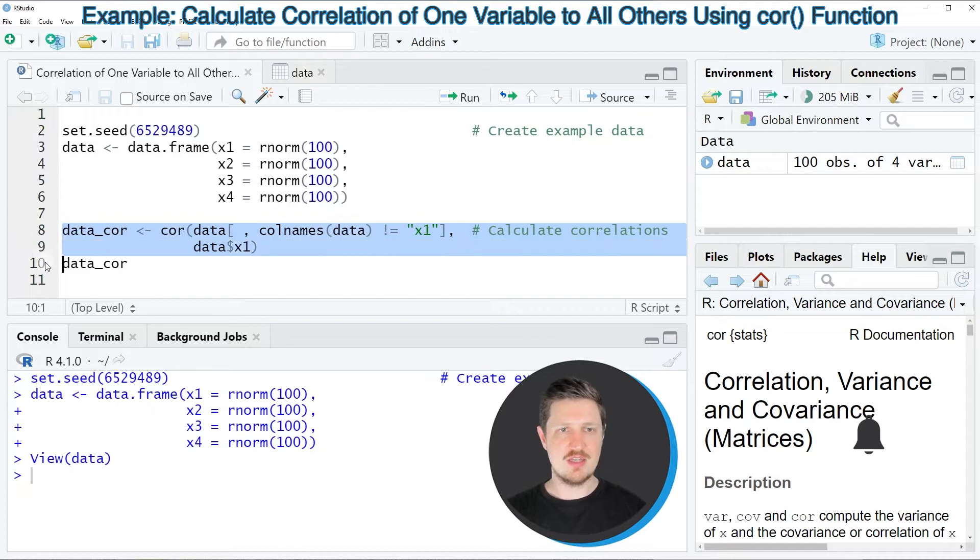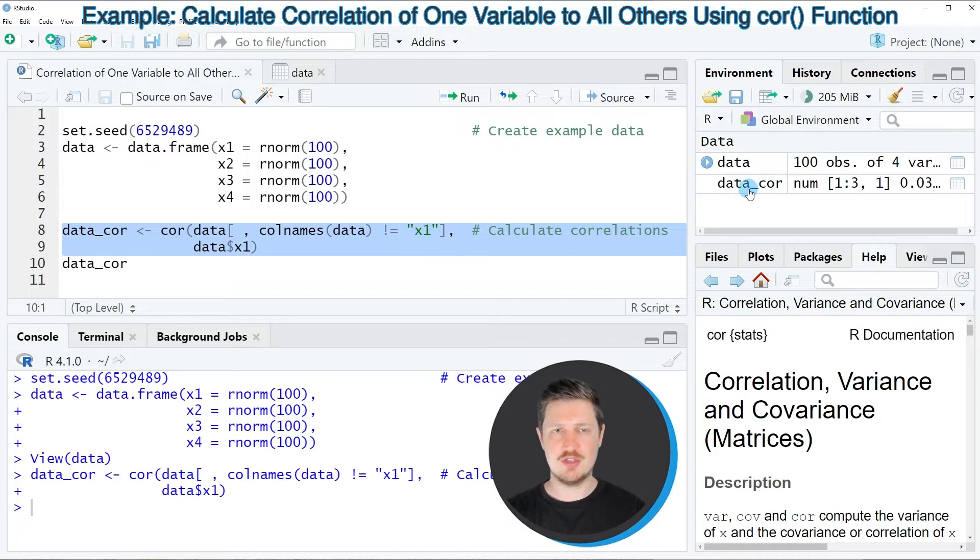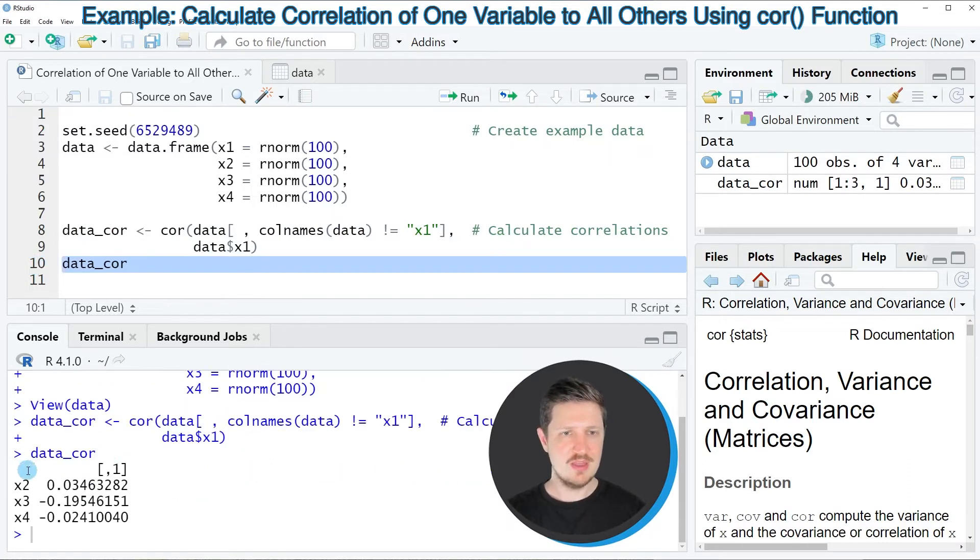If you run lines 8 and 9 of the code, you can see at the top right of RStudio that a new data object called data_cor is appearing. We can print the content of this data object to the RStudio console by running line 10 of the code.